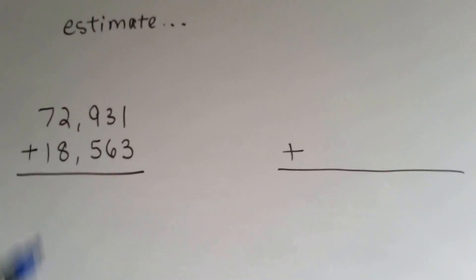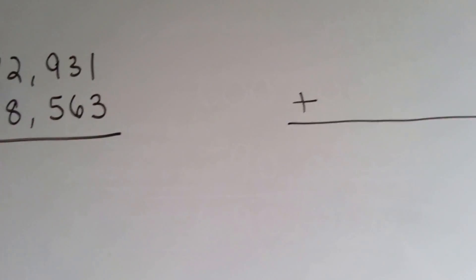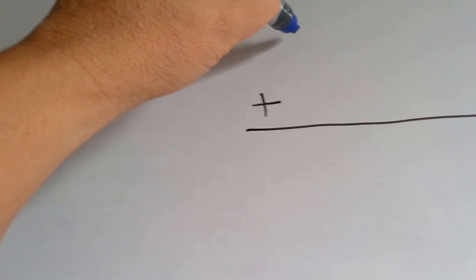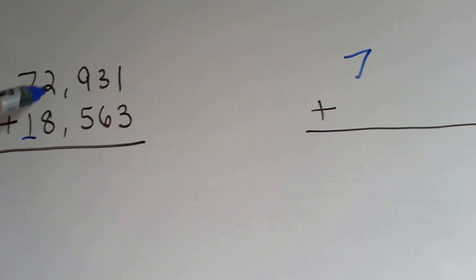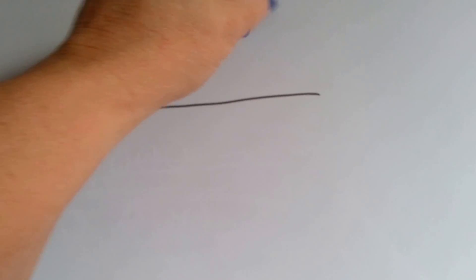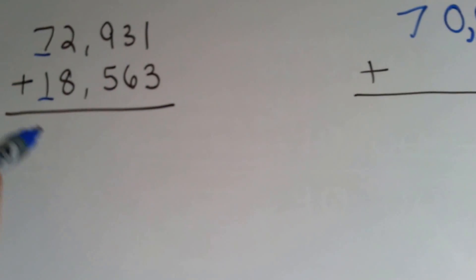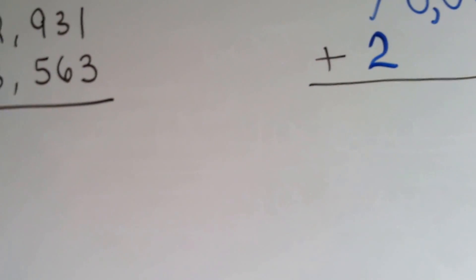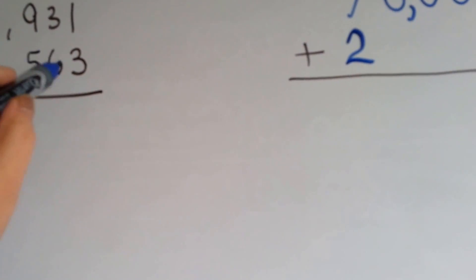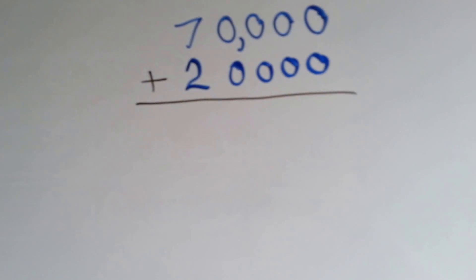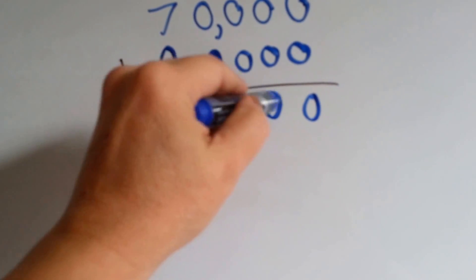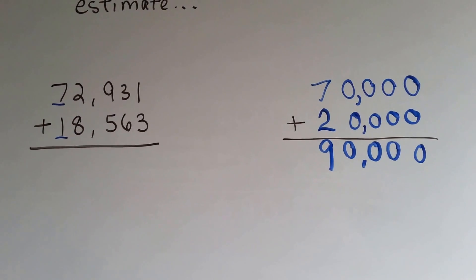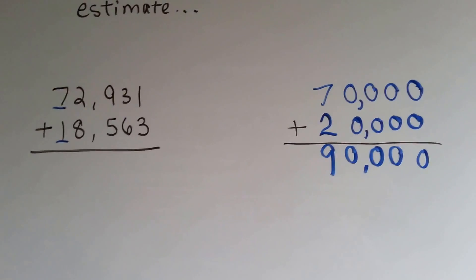Let's try it again — we're just going to do estimates. This is the place value we're rounding. The 2 tells the 7 to stay the same. The 2 is done with its job and it becomes a 0, so we've got 1, 2, 3, 4 zeros. Put our comma in after the 3rd place mark over. The 8 tells the 1 to go up to a 2. When it's done with its job, it turns into a 0, so we need 1, 2, 3, 4 zeros. Now we can add: 0, 0, 0, comma, 0, 9. So 72,931 plus 18,563 is estimated to be about 90,000.